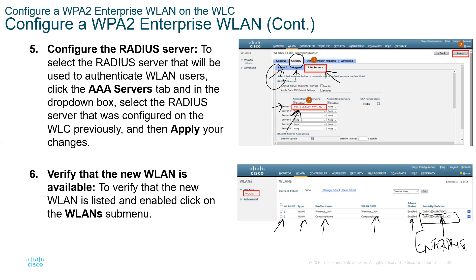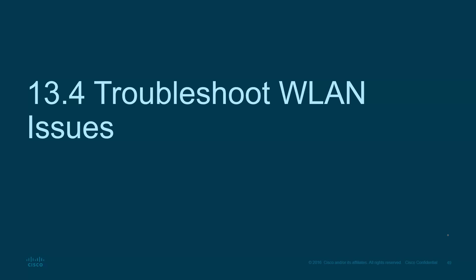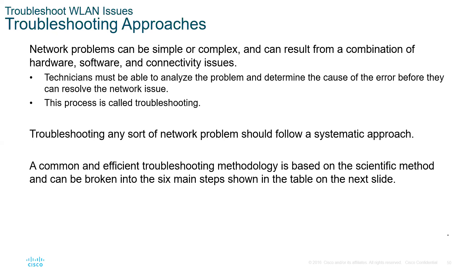That's how you select enterprise security. Now moving to troubleshooting our wireless LAN issues. Network problems can be simple or complex. They can result from a combination of hardware, software, and connectivity issues. Technicians must be able to analyze the problem and determine the cause of the error before they can resolve the issue. This process is called troubleshooting.